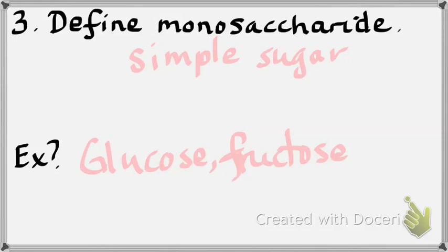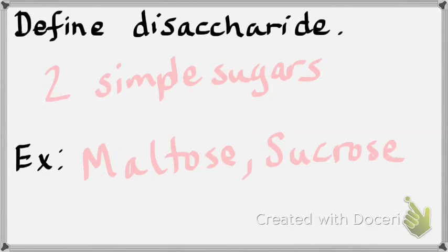An example of a disaccharide is sucrose or maltose. Sucrose is table sugar, historically coming from sugar cane and sugar beets. Whole economies were built on that, especially in the Caribbean. Last one — polysaccharide means many sugars.